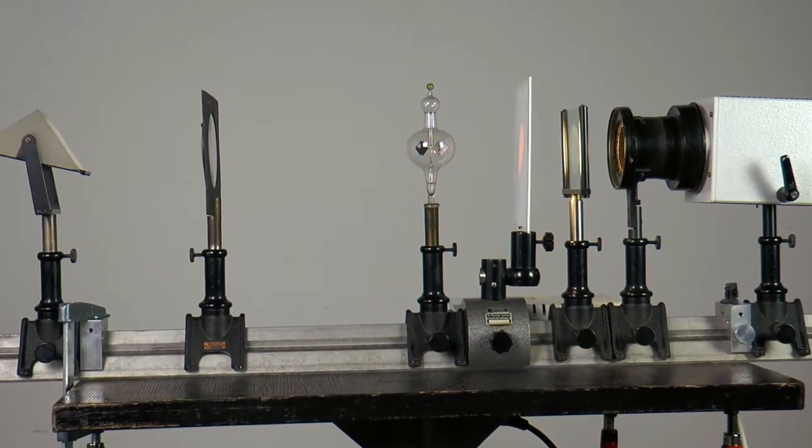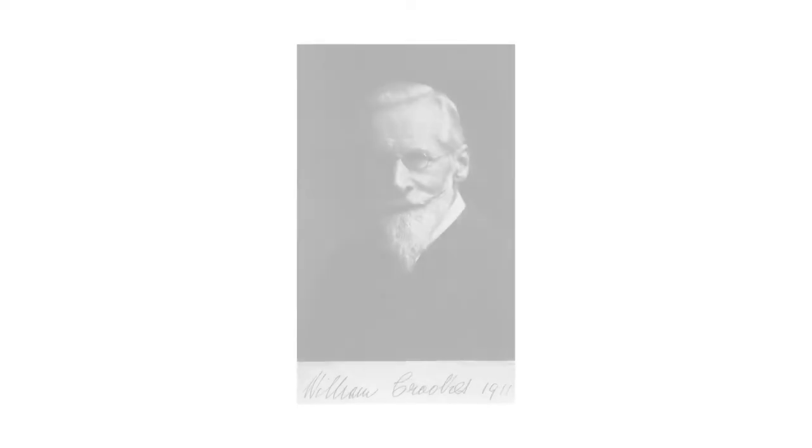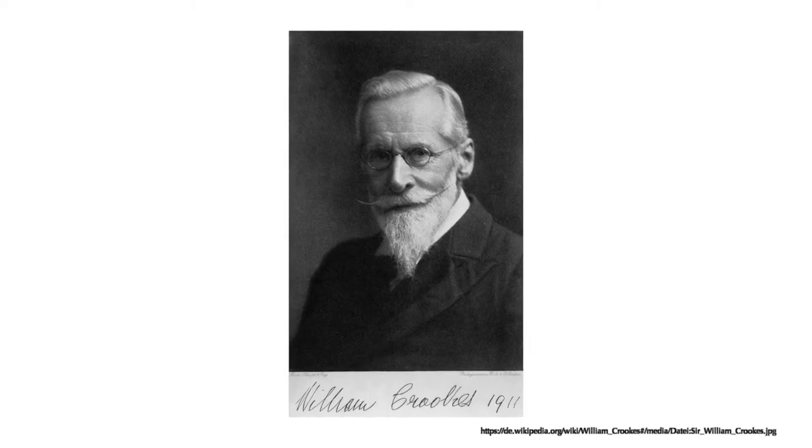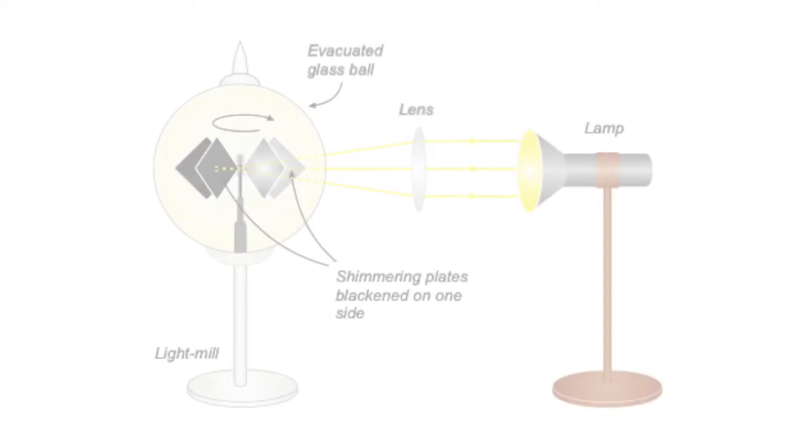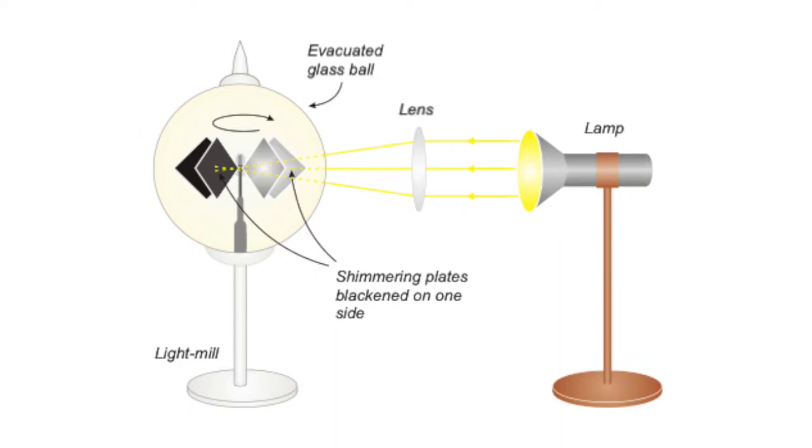Lightmill. The lightmill was invented in 1873 by the London physicist William Crookes. It consists of an evacuated glass ball. The remaining pressure is between 1 and 5 pascals.